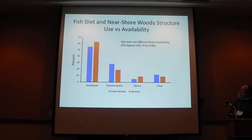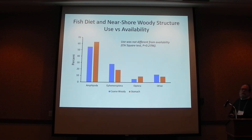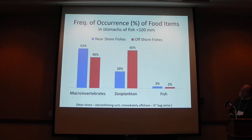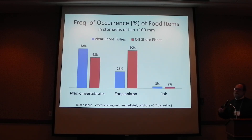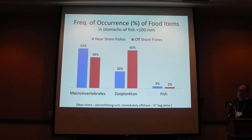For fish diet and near-shore woody structure, a pair of students looked at use versus availability. What was found in the woody debris was not significantly different from what was found in the stomach contents, suggesting fishes were not selecting toward one particular taxonomic group. Interestingly, fishes in near-shore areas had a higher percentage of macroinvertebrates in their diet, while fishes just offshore — about five meters from the shoreline — had higher percentages of zooplankton.